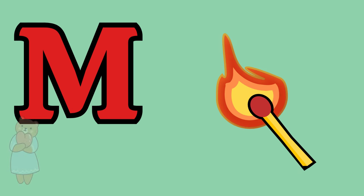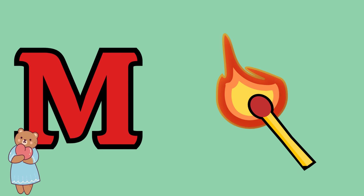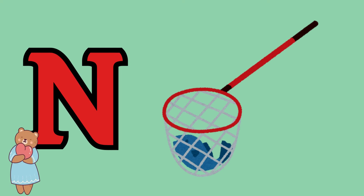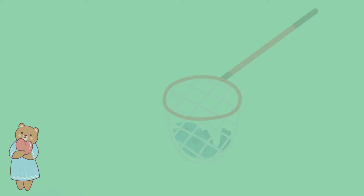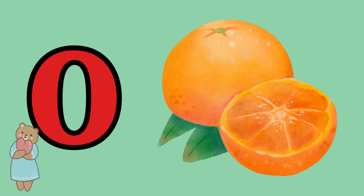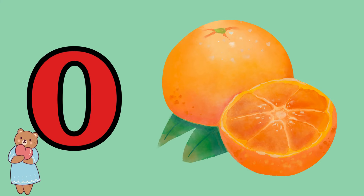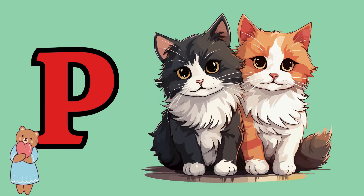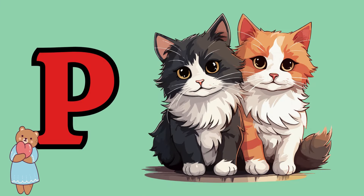M is for mat, m-m-mat. N is for net, n-n-net. O is for orange, o-o-orange. P is for pet, p-p-pet.